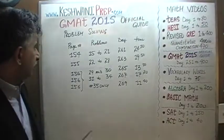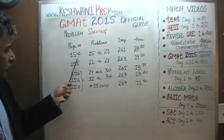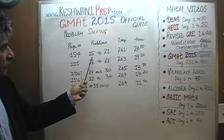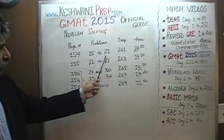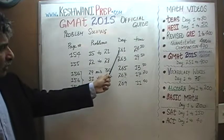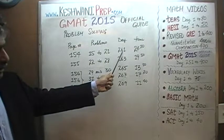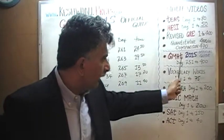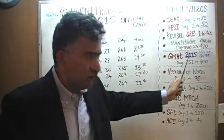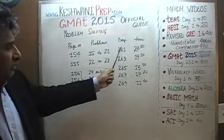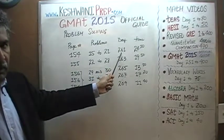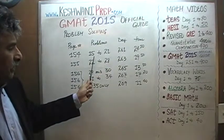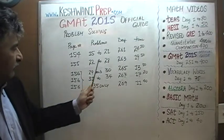We are on page number 154. On page number 154, you will find problem number 15 through 21. All of those problems were solved on day number 261. You will find the solutions to all of them from day 251 to 400, GMAT 2015. Just type in GMAT math day 261 and you will find the video with solutions to problems 15 through 20.